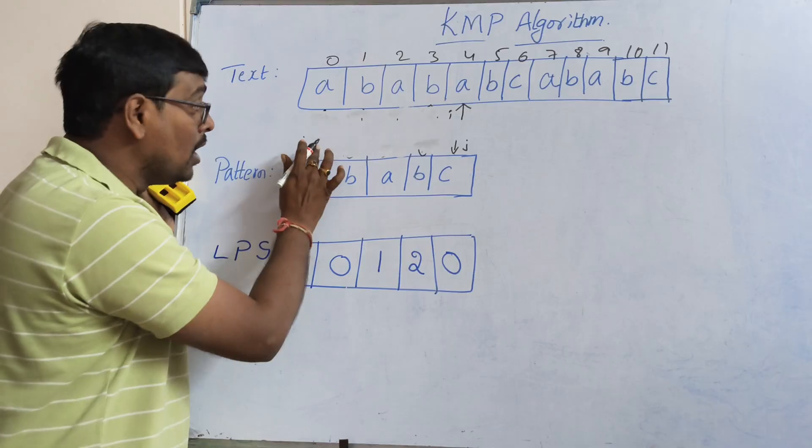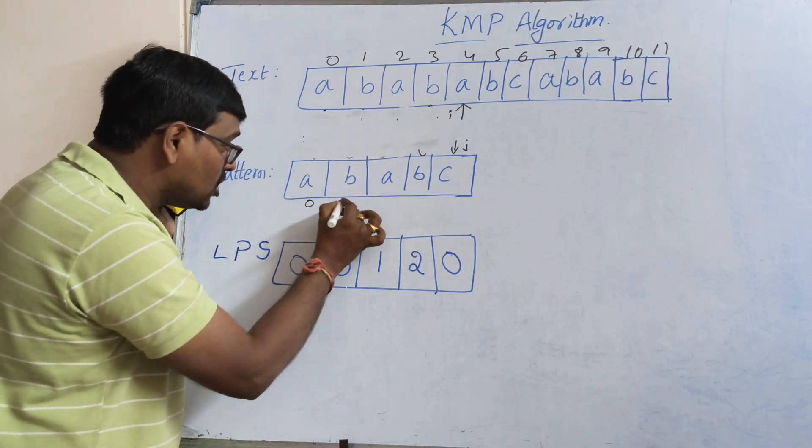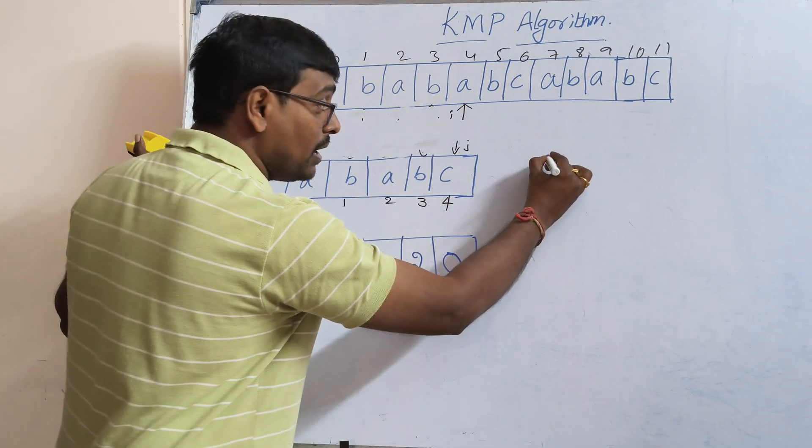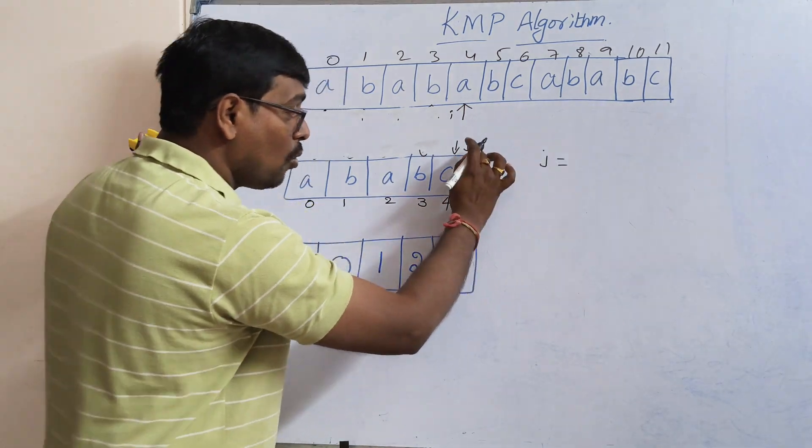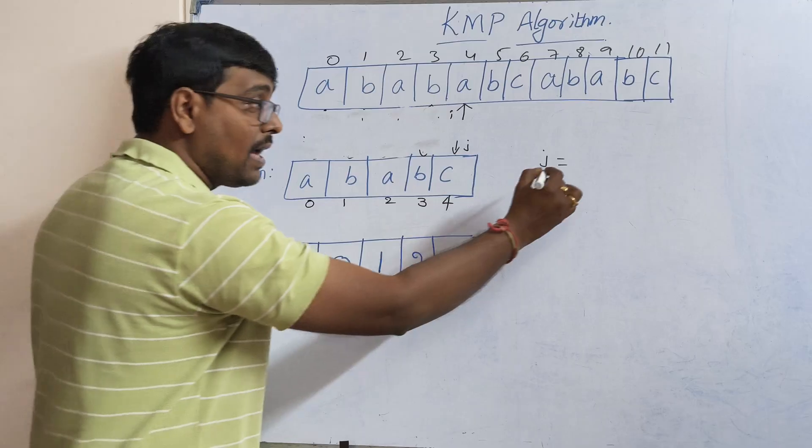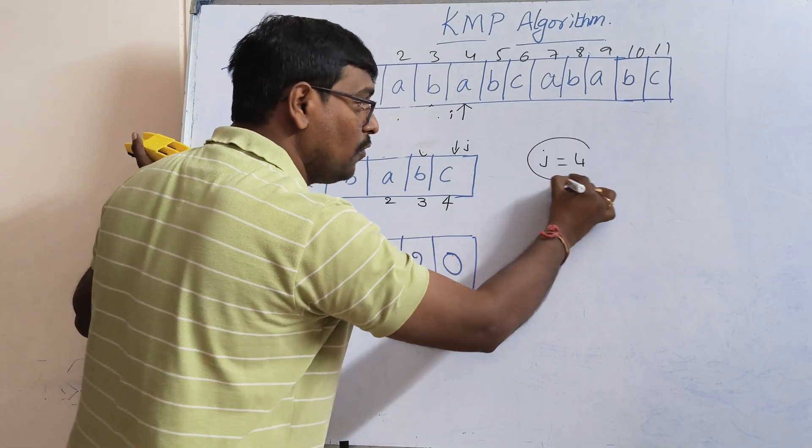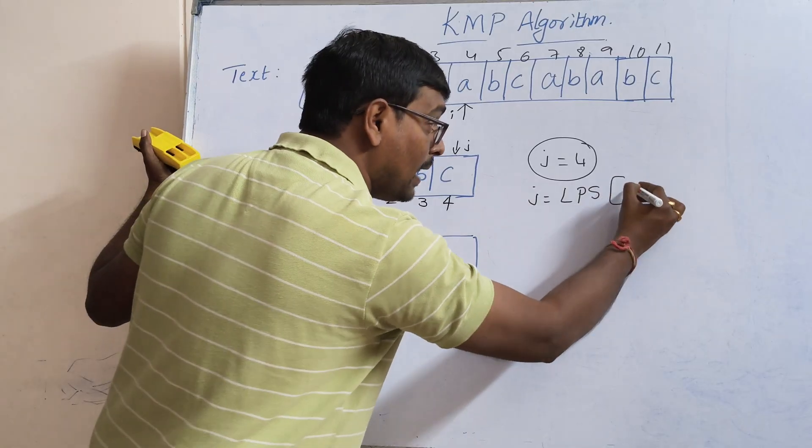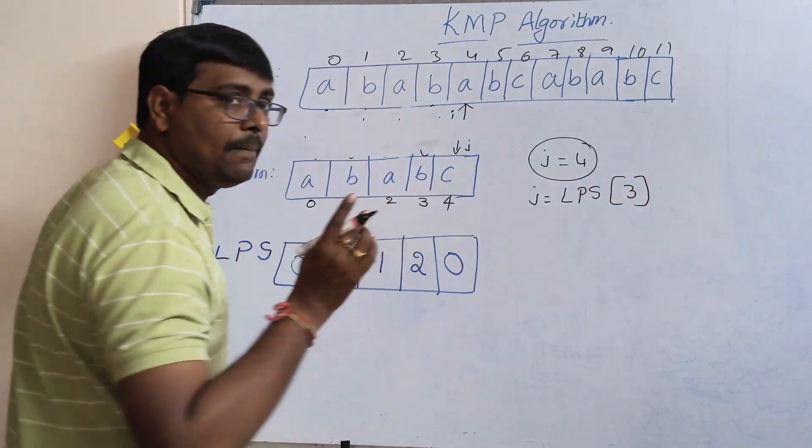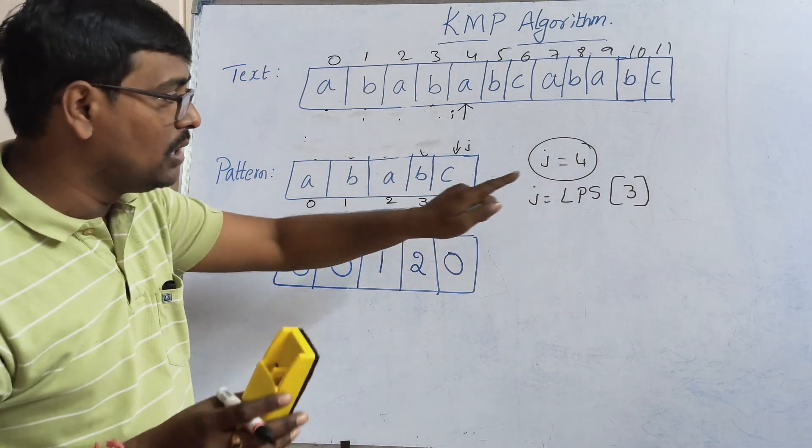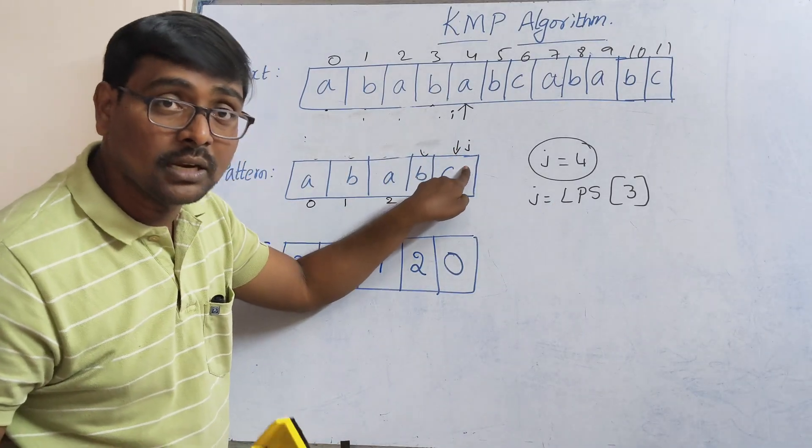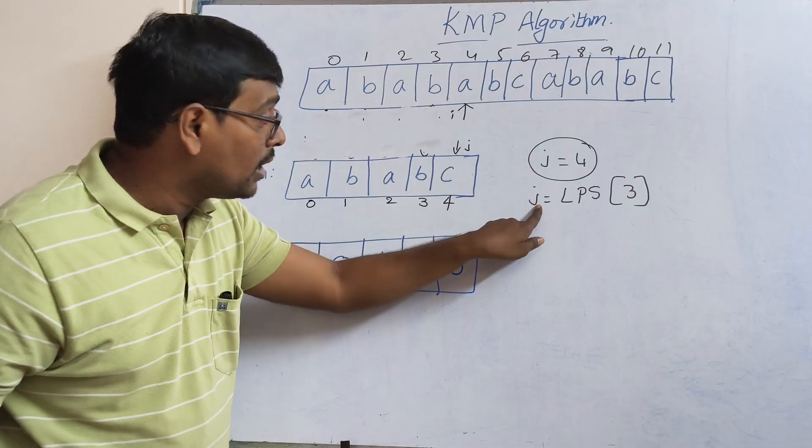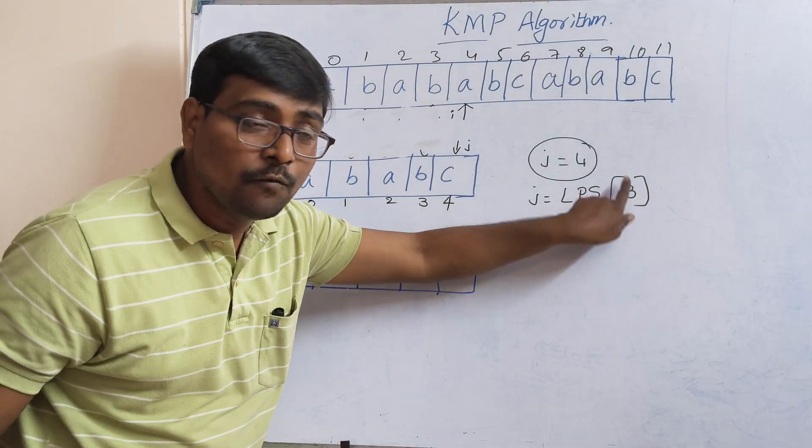But here, whenever mismatch occurred, we are using the LPS table. Now what are the indexes? 0, 1, 2, 3, 4. Whenever mismatch occurred, what is the value of 'j'? The value of 'j' is equal to 4. If mismatch occurs, the 'j' value is updated to LPS of j minus 1. This is the only thing you need to remember.